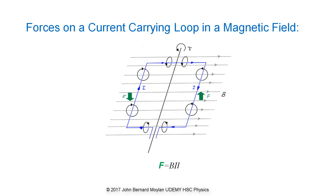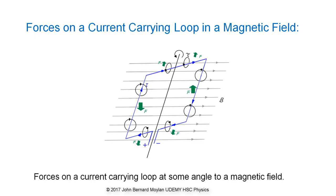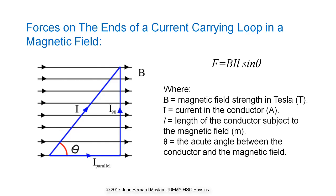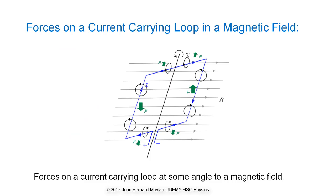When a current carrying loop is at an angle to an external magnetic field rather than parallel to it, forces are generated on the ends of the loop. These forces can be calculated using the formula F equals B I L sine theta and are directed outwards parallel to the axis of rotation as can be seen in the diagram.